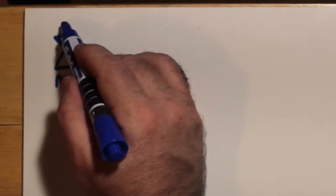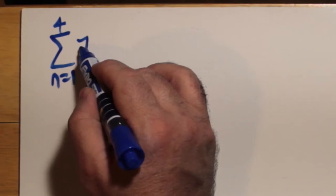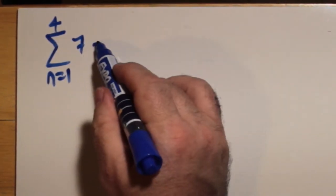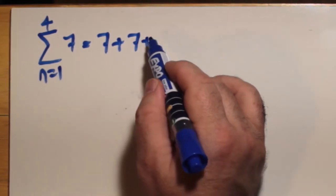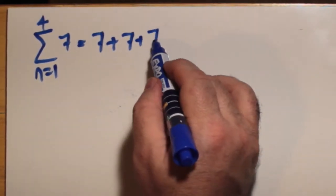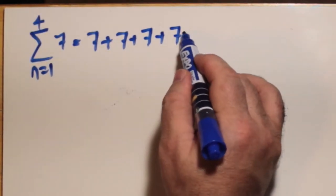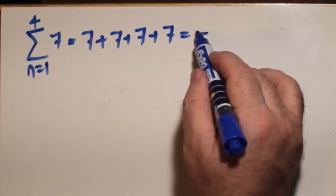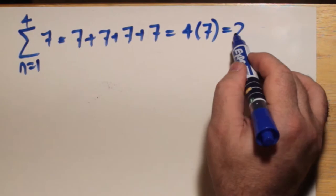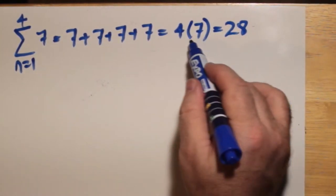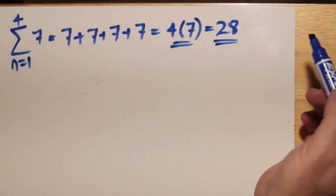We have another example here where what if you have, for example, a constant and no formula but really just the number like 7 in front of sigma. How would you handle that as n goes from 1 to 4? Well, that just means you add 7 to itself 4 times. n still counts from 1 to 4 but is not used in the formula.